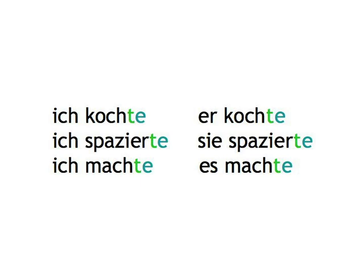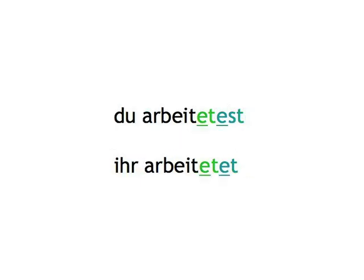And in the second person singular and plural, an e is added to avoid a consonant cluster, as is usual in German. Remember the present tense of arbeiten? Du arbeitest, ihr arbeitet. In the simple past tense, we even get two e's added in the du and ihr forms of arbeiten to avoid consonant clusters — one to separate the T at the end of the stem from the simple past T ending, the second to avoid the clusters TST and TT: du arbeitetest, ihr arbeitetet.